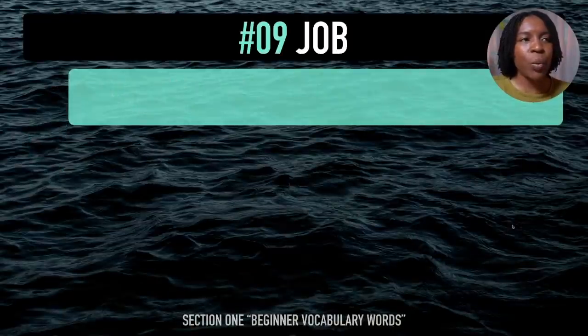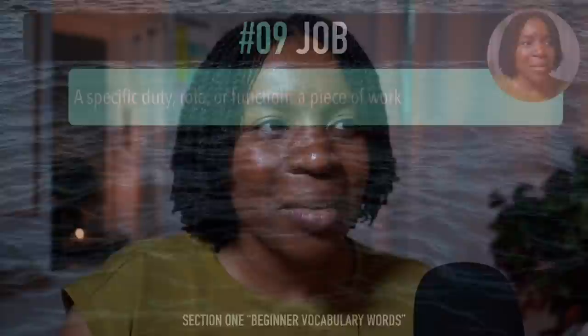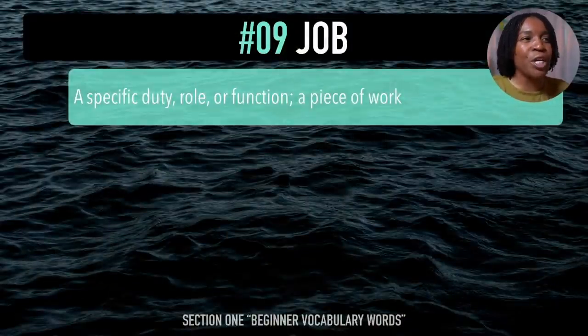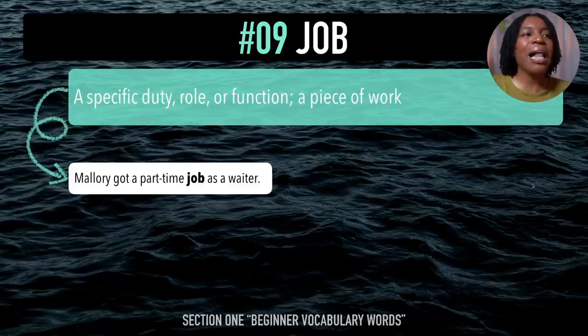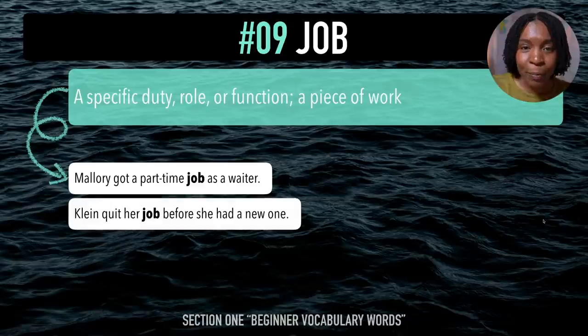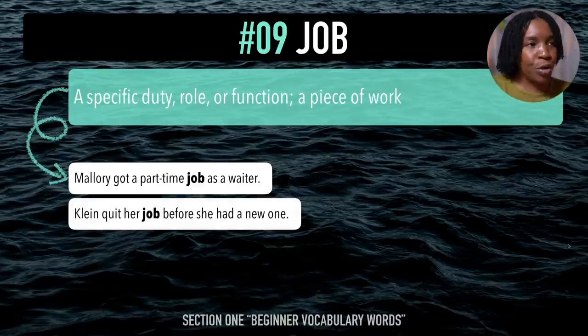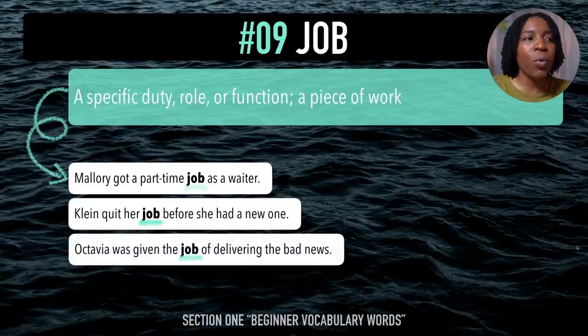The ninth beginner vocabulary word is 'job'. After me — job. A job is a specific duty, role, or function, or a piece of work. Example sentences: Mallory got a part-time job as a waiter. Klein quit her job before she had a new one. Octavia was given the job of delivering the bad news. Last time — job.